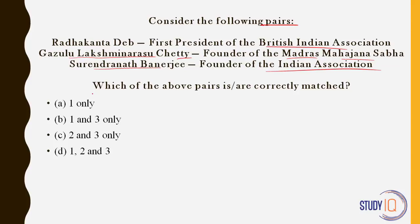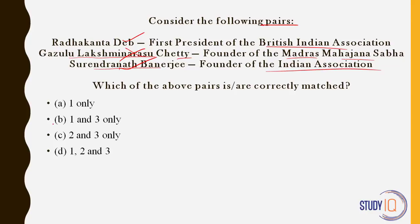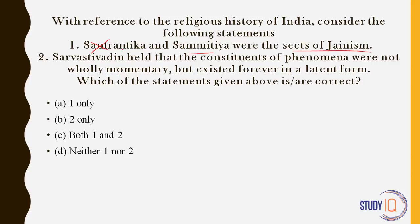With reference to the religious history of India: Tantrika and Samitya were sects of Jainism — this is wrong. They were sects of Buddhism. Sarvastivadin held that the constituents of phenomena were not wholly momentary but existed forever in a latent form. Statement 1 is wrong; statement 2 is correct. All these — Sautrantrikas, Samitya, and Sarvastivadin — are Buddhist philosophical schools. The answer was B, 2 only.